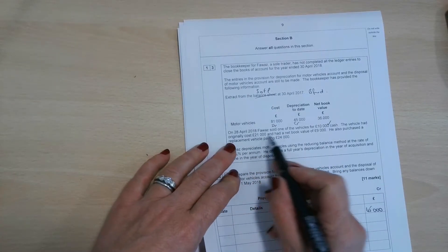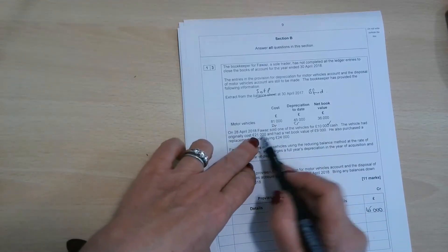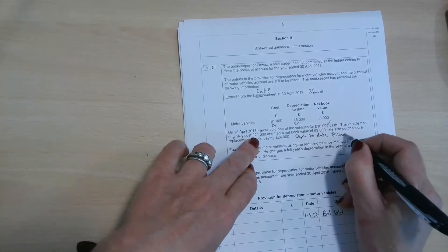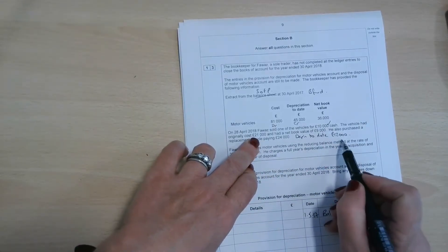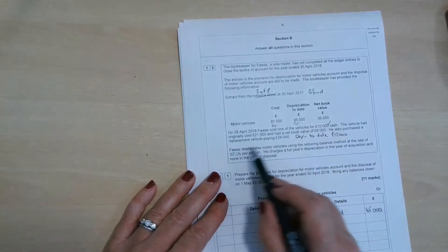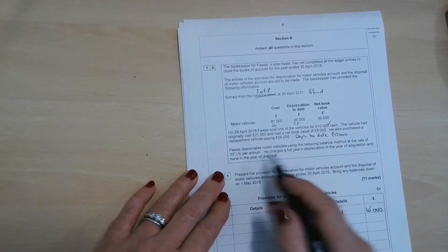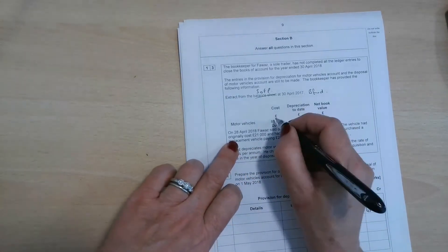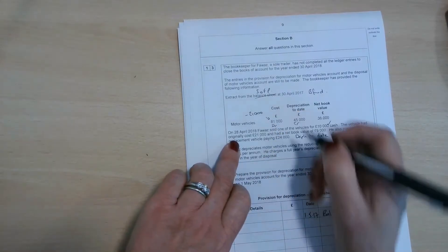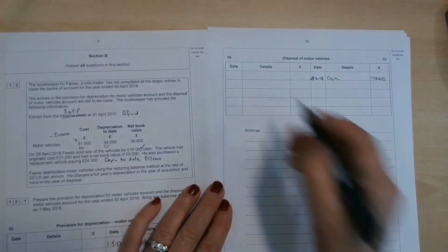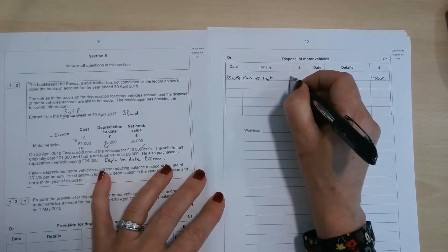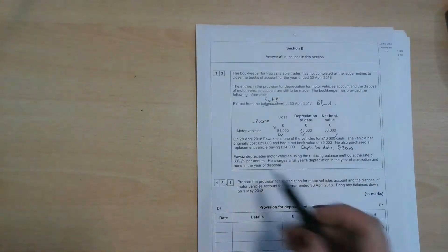The vehicle had originally cost £21,000 and had a net book value of £9,000. So if the cost was £21,000 and the net book value was £9,000, the depreciation to date is going to be the difference between those two figures, which is £12,000. So the £21,000 cost minus the net book value means 21 minus 9 leaves £12,000. That must be the depreciation to date. And he's also purchased a replacement vehicle paying £24,000. So let's just think about this then. So the original cost of £21,000 is going to need to come out of that figure. So we're going to minus £21,000. If we have the T account, that would be a credit. So £21,000 coming out of there. And then we're going to debit it into the disposal account. So on the 28th of April, we've got the motor vehicle at cost. Original cost, £21,000. So that's come from there.